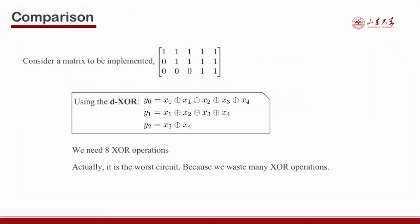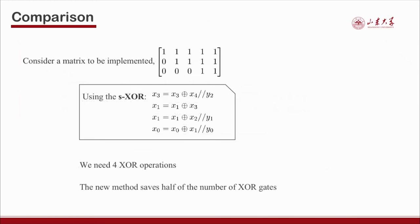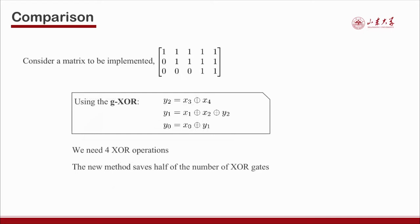This represents the worst circuit because many XOR operations are wasted. The second XOR metric has been proven NP-hard to find its minimum number, so it is difficult to find the optimal solution, especially for larger matrices. For the 3×5 matrix, we can obtain an implementation with 4 XOR operations. The third type — SXOR — can generate new values to save intermediate values, and for the same matrix it also requires 4 XOR operations.